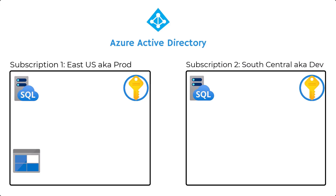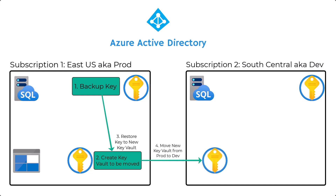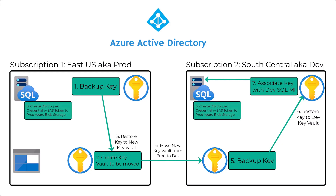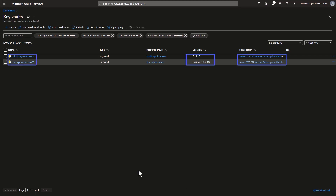We will start by backing up the keys for the Azure Key Vault associated with our SQL Managed Instance. We'll create a second key vault to move to our dev subscription and restore the key from backup. We'll then move that key vault from production to dev, back up the key in dev, and restore it to the dev key vault. We'll associate that key with the dev SQL MI, create a database-scoped credential with a SAS token on both instances, perform a copy-only backup to Azure Blob Storage, and restore it to our dev SQL Managed Instance.